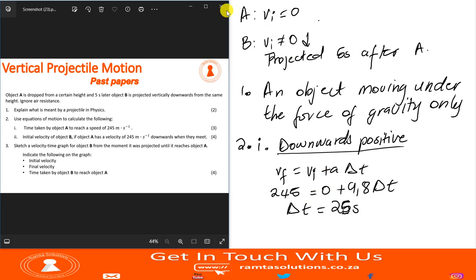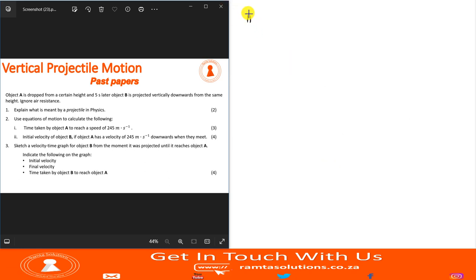Now, let's get to the second question. The second question says, the initial velocity of object B, or rather we must calculate the initial velocity of object B if object A has a velocity of 245 meters per second downwards when they meet.